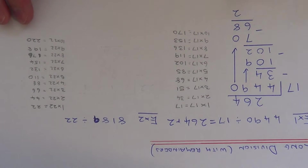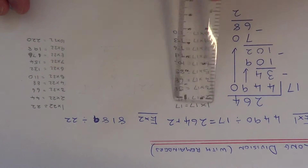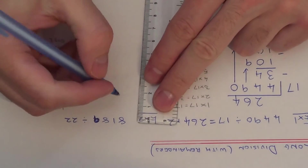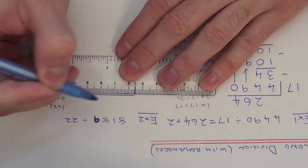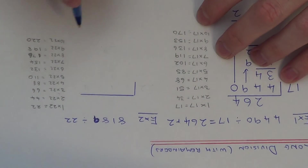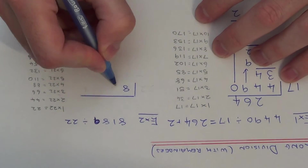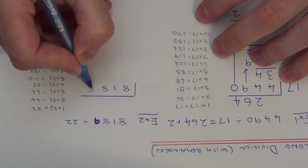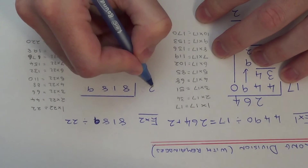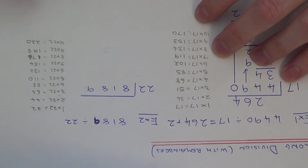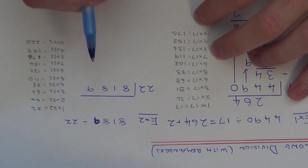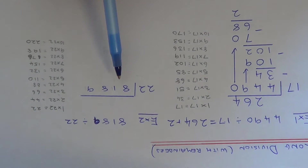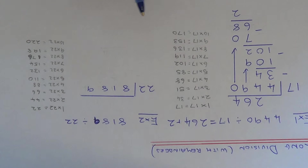So let's move on to example 2. We've got to work out 8189 divided by 22. Set out the division in exactly the same way. Again, I've written down the multiples of 22 on the side of the page before the start of the video — this will save time later. So first of all, 8 divided by 22 we can't do, so we need to do 81 divided by 22.